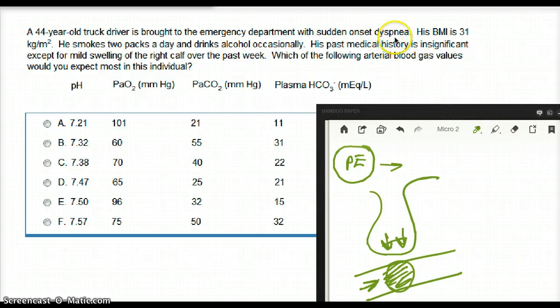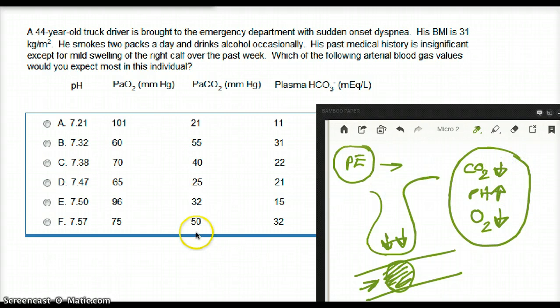So, when they have dyspnea, you know what they tend to do? They tend to hyperventilate. And when they hyperventilate, what happens to their carbon dioxide value? It drops. What happens to their pH? It rises. What happens to their oxygen level? This also drops, because the perfusion cannot take part with the ventilation because of the PE. So, this makes this very easy.